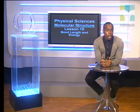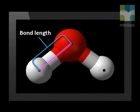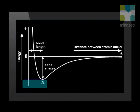Hello Grade 11s, welcome to this lesson on bond length and bond energy. Let's start with a reminder of what these words mean. For each bond, the bond length is the distance between the bonded nuclei. Remember that at this distance, the two bonding atoms are most stable — in other words, they have the least amount of chemical potential energy.